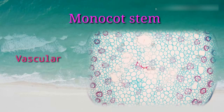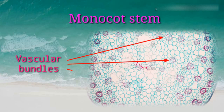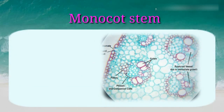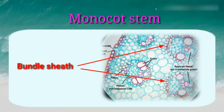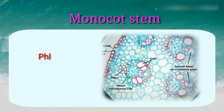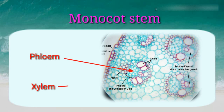Whenever you see the vascular bundles, you will observe that numerous vascular bundles are scattered throughout the ground tissue. These vascular bundles are oval in shape and surrounded by a sclerenchymatous sheath called bundle sheath. It contains both phloem and xylem — the phloem is present towards the periphery and xylem towards the center. Cambium is absent in them.